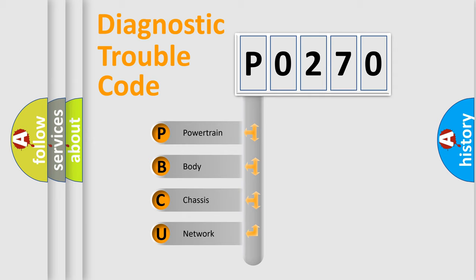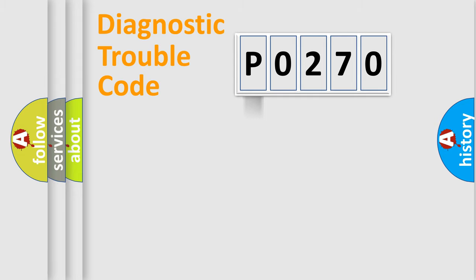We divide the electric system of the automobile into four basic units: Powertrain, Body, Chassis, and Network.